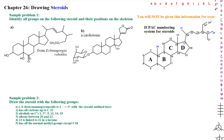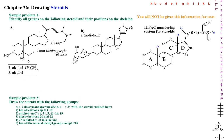In this example, we see there are alcohols on positions 3 and 5. Don't forget to classify your alcohols — on 3, it's secondary; on 5, it's tertiary.